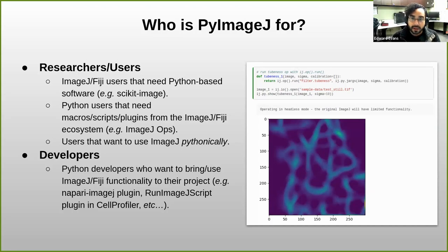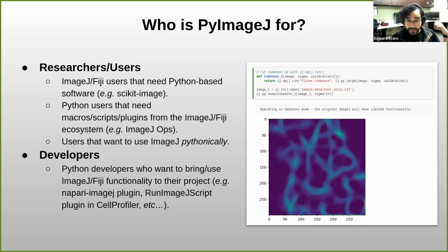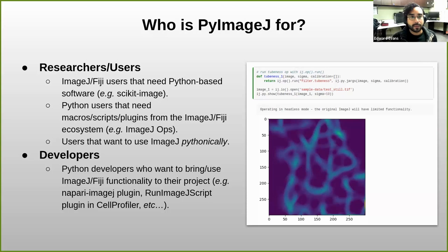For anyone who wants to interact with ImageJ in a Pythonic way, PyImageJ is for you. For developers, it's useful if you want to bring ImageJ/Fiji plugins or image processing features to your project. Examples include napari-imagej, which Gabe Selzer demonstrated earlier this week, and the Run ImageJ Script plugin in CellProfiler. That plugin leverages PyImageJ to avoid writing data to disk, unlike the Run Macro Script which is slower because it actually writes to disk.